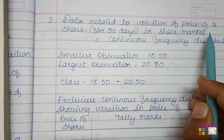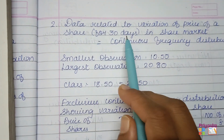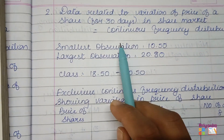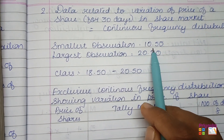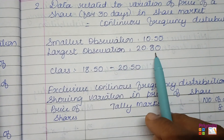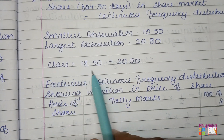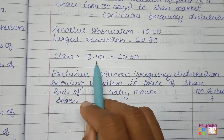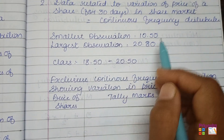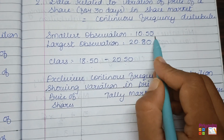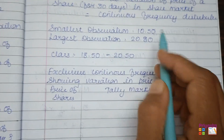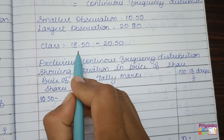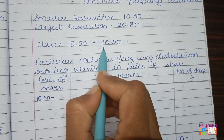The data relates to variation in the price of a share over 30 days in the share market, turning into a continuous frequency distribution. The smallest observation is 10.5 and the largest is 20.80. A sample class is given as 18.50 to 20.50. Since the minimum observation is 10.5, we start from 10.50.